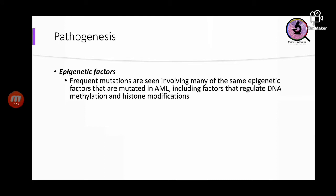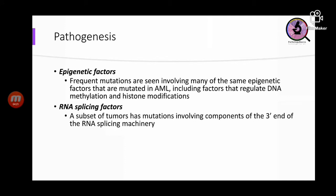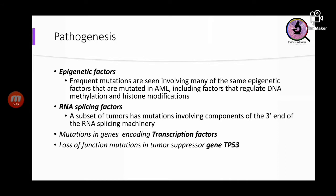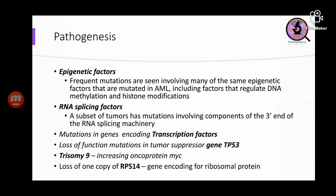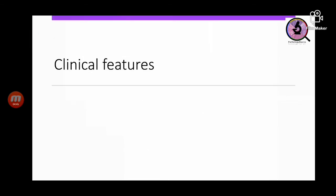The pathogenesis of MDS: they are clonal stem cell disorders with many of the same mutations seen in AML. Epigenetic factors like DNA methylation and histone modifications can cause MDS. RNA splicing problems — especially at the 3' end of the splicing machinery — mutations in transcription factor genes, loss of function of TP53, trisomy 9 increasing the oncoprotein MYC, and loss of a copy of the ribosomal protein encoding gene RPS14 are all implicated in MDS. Clinically it is predominantly a disease of older adults, 60 to 70 years of age.